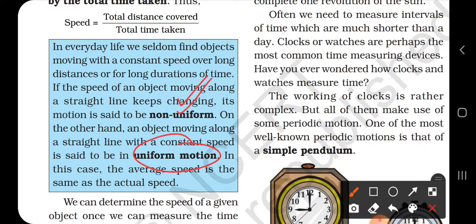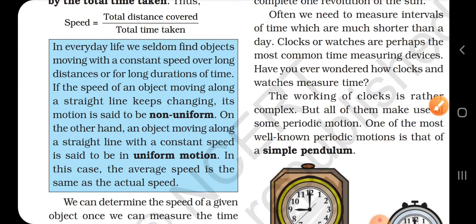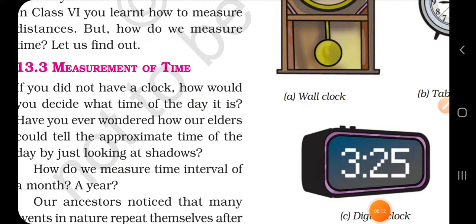So uniform motion: equal distance, equal interval of time. Non-uniform: equal distance in unequal interval of time.